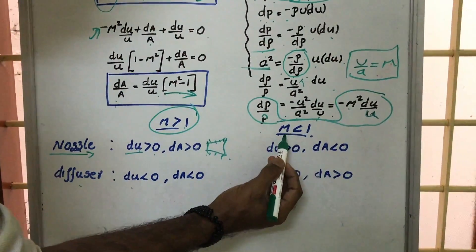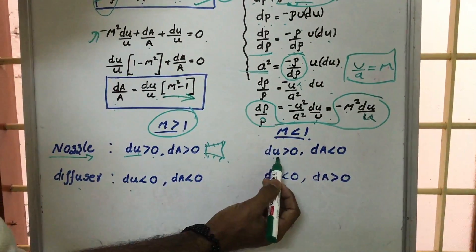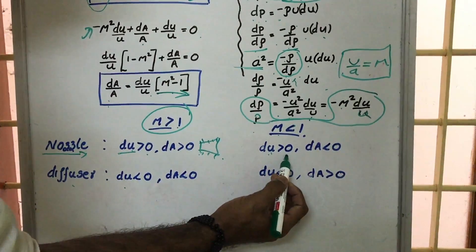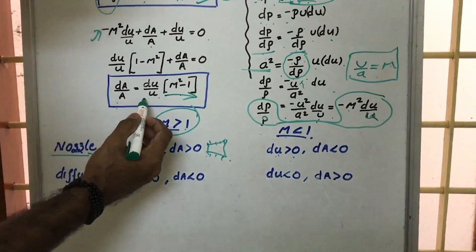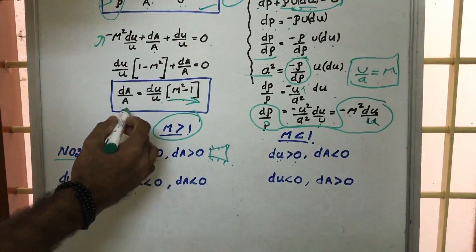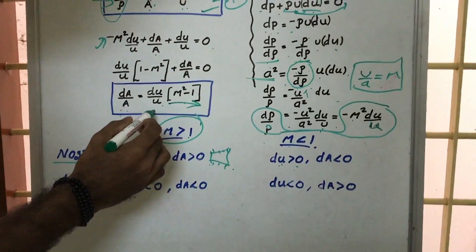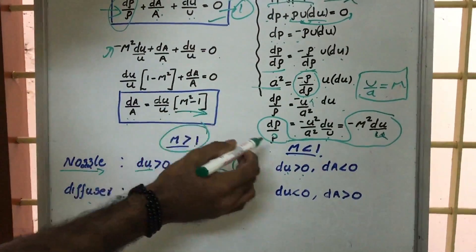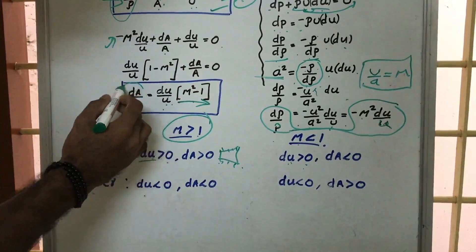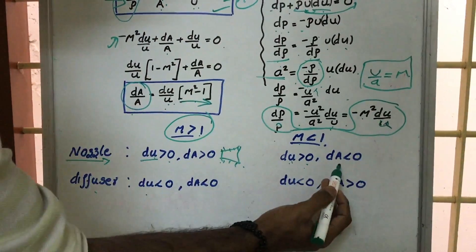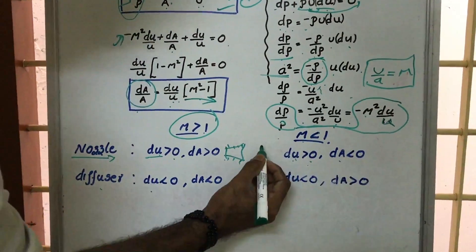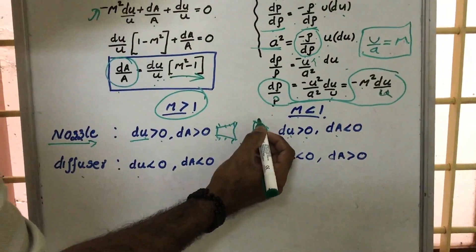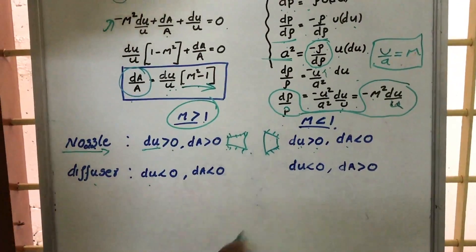For the subsonic condition, M is less than 1 and du is greater than zero for a nozzle. Here M²−1 is negative, so dA must be negative — meaning the area is decreasing. Therefore, a subsonic nozzle has a converging shape.